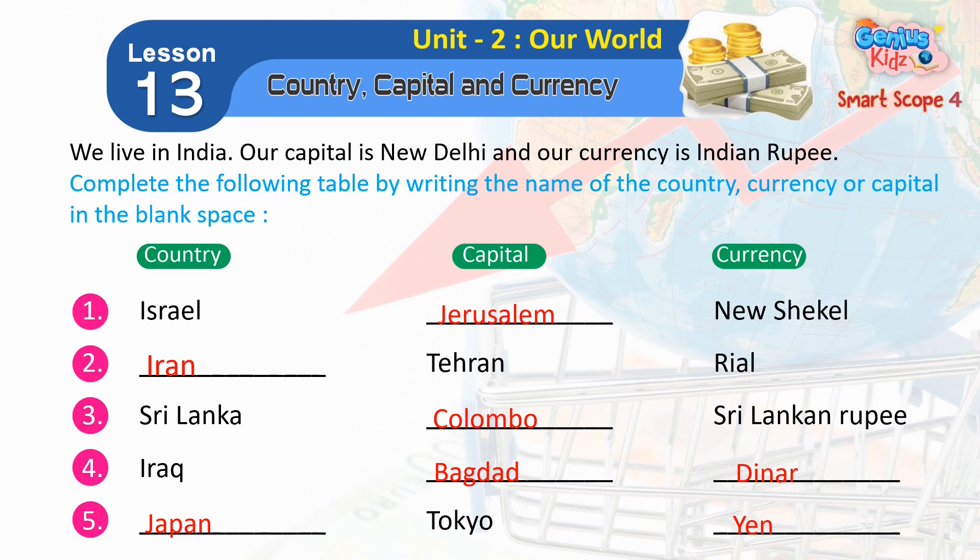3. Sri Lanka — Colombo — Sri Lankan Rupee. 4. Iraq — Baghdad — Dinar.